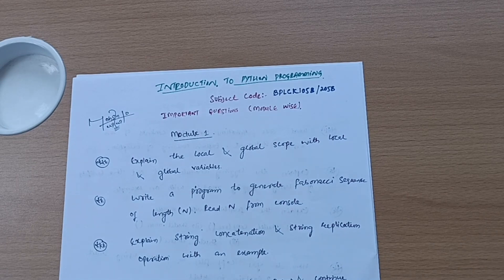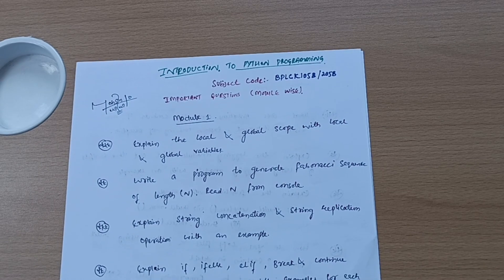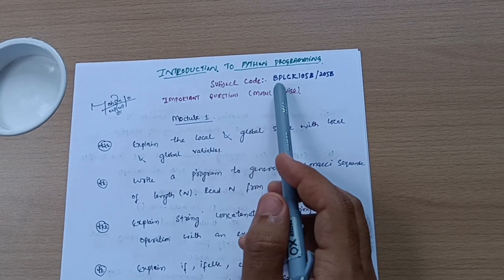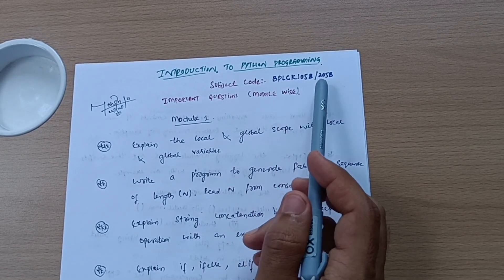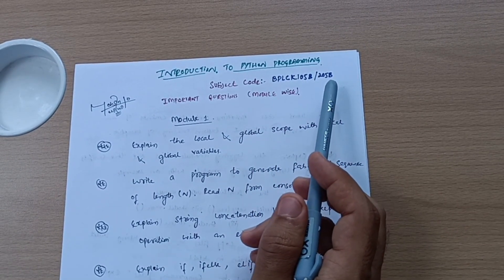We should not show negligence towards Python programming as there is vast syllabus and varieties of questions possible in the examination. Let me discuss some super important questions which I have considered from previous year question papers, model question papers, and syllabus copy. The subject code is BPLCK105BR205E and backlog students can also refer these important questions.